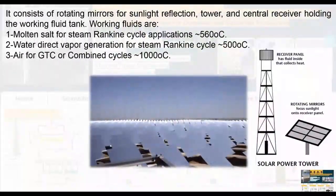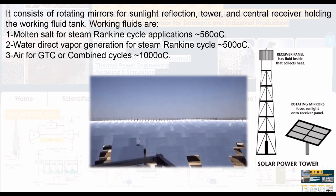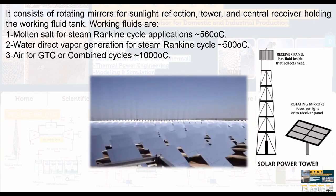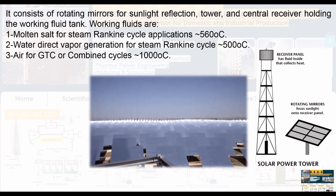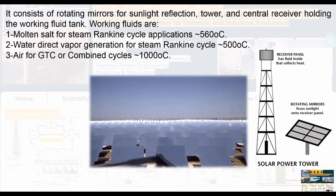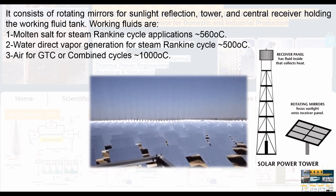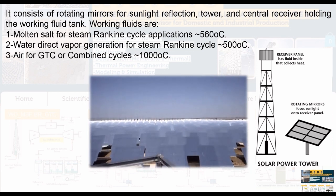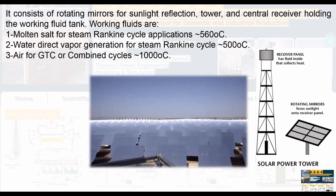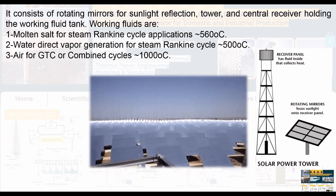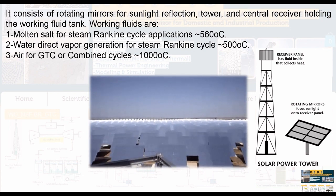The solar tower simply consists of rotating mirrors for sunlight reflection, and a tower to hold the central receiver, which contains the working fluid. Working fluids are usually molten salt for steam Rankine cycle applications, up to more than 500 degrees Celsius. We also have water-steam direct steam generation for the Rankine cycle, and options for a gas turbine cycle or combined gas turbine cycle.